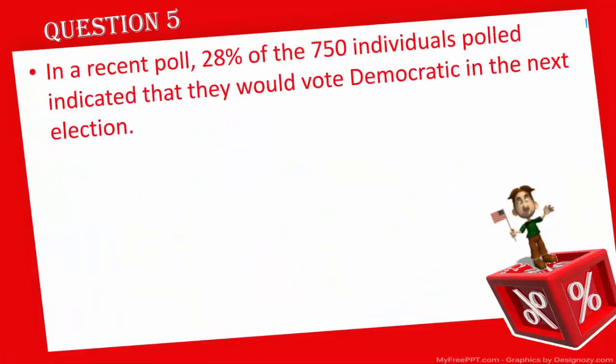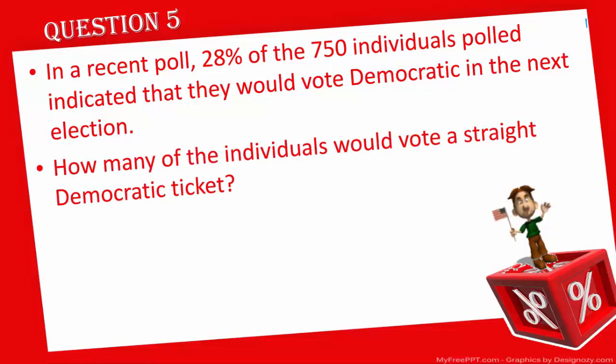In question number five, it says: in a recent poll, 28% of 750 individuals polled indicated they would vote Democrat in the next election. How many of those individuals would vote a straight Democratic ticket? We have 750 individuals polled, and we're told that 28% of them are going to vote Democrat. We want to know exactly how many people 28% represents.